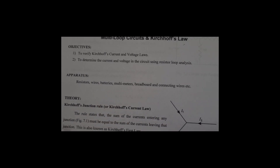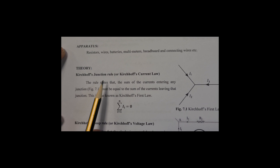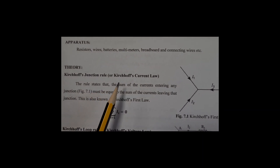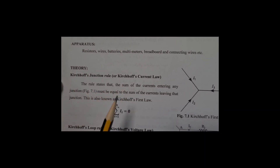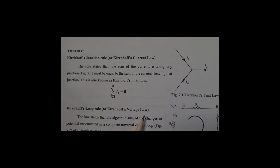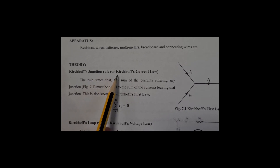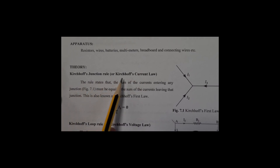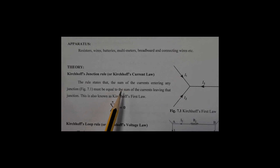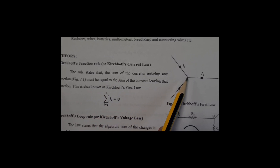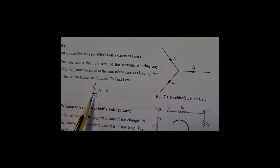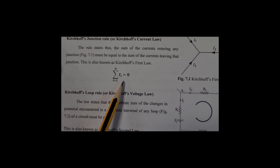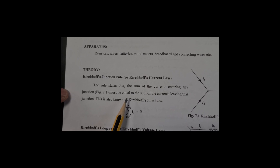The theory. Taking Kirchhoff's Law, there are two main laws talking about the current and voltage in the circuit. The Kirchhoff Junction Rule, or Kirchhoff Current Law, states that the algebraic sum of the currents at the junction point is equal to zero. Current coming towards the junction is taken as positive; current leaving the junction is taken as negative.